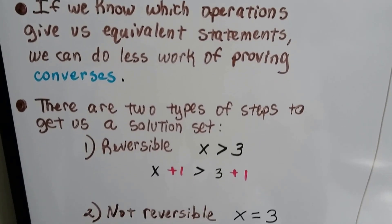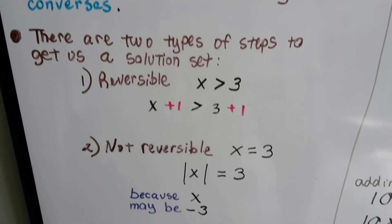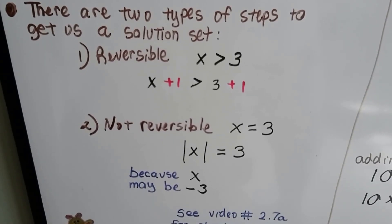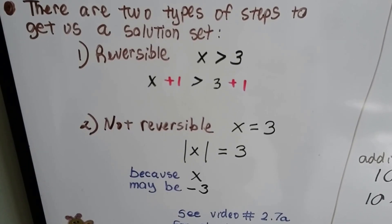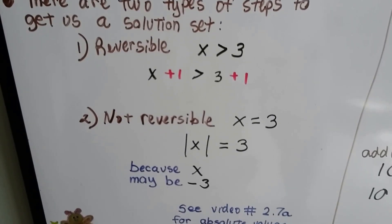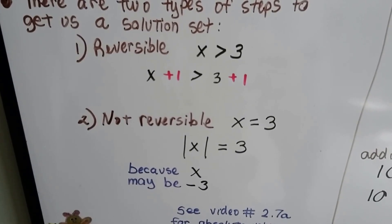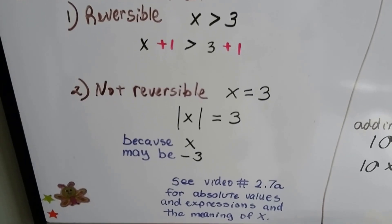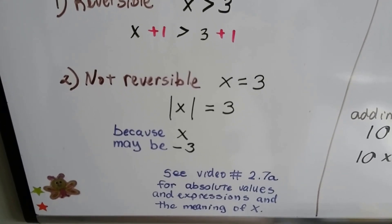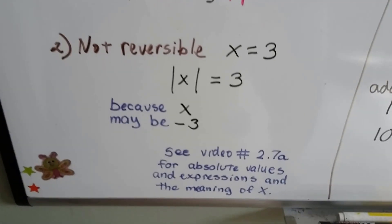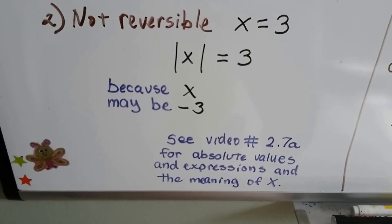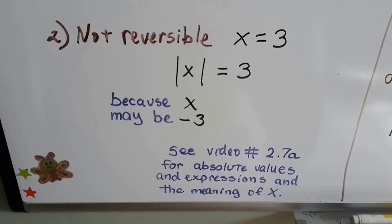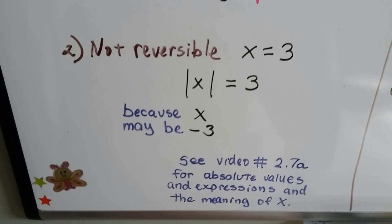There are two types of steps to get us a solution set: reversible and non-reversible. The reversible one says that we can add the same amount to each side or subtract the same amount to each side, and we're going to get an equivalent statement. The non-reversible one deals with an absolute value because x might be a negative 3. If you're confused about the absolute value, go to video 2.7a — there's a link in the description. We talked about absolute values and expressions and the meaning of x when it's in absolute value bars.